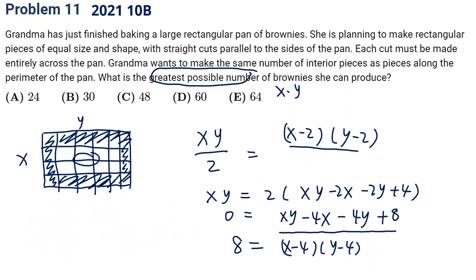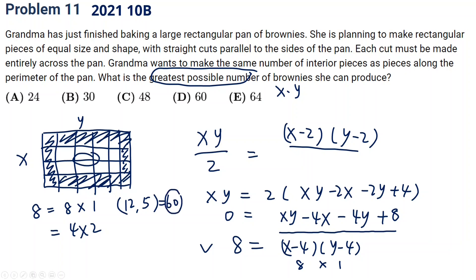Now we find x and y meeting this condition. 8 can be 8 times 1 or 4 times 2. For the 8 times 1 case, x and y can be 12 and 5, giving a product of 60. For the 4 times 2 case, x and y are 8 and 6, giving a product of 48. We want the greatest x times y, so the answer is 60.